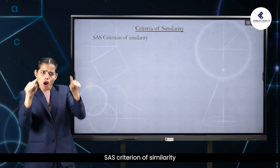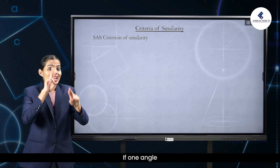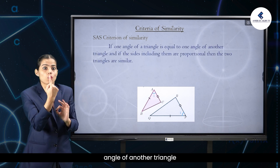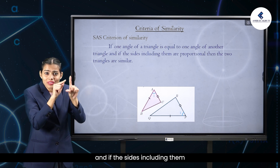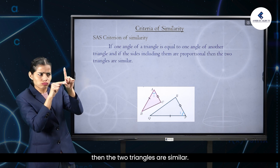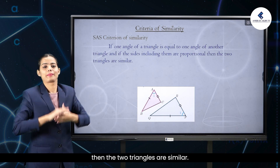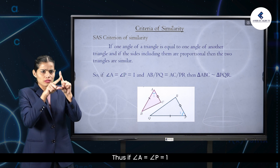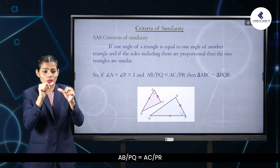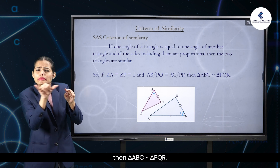Side-angle-side criterion of similarity: if one angle of a triangle is equal to one angle of another triangle and the sides including them are proportional, then the two triangles are similar. Thus, if angle A = angle P and AB/PQ = AC/PR, then triangle ABC ~ triangle PQR.